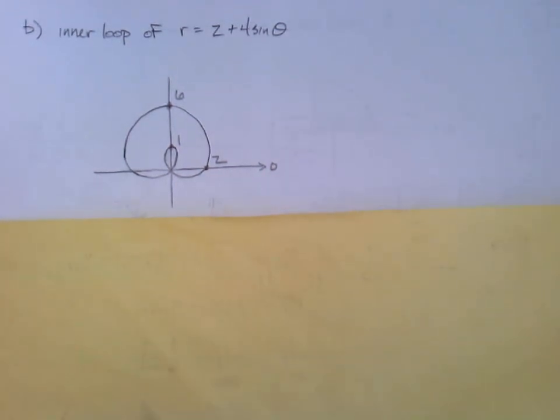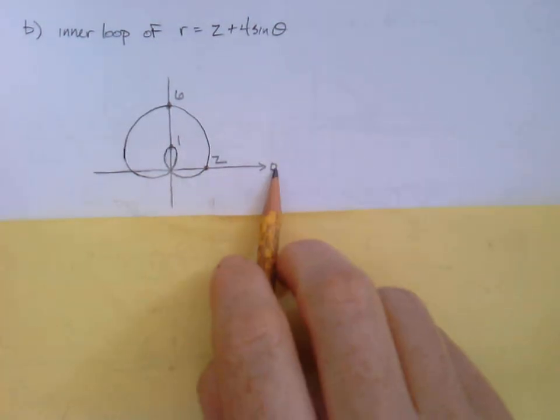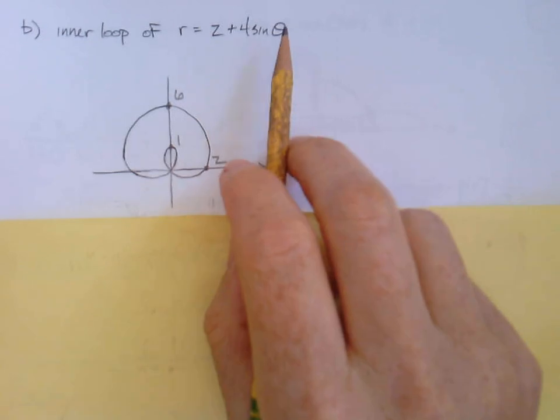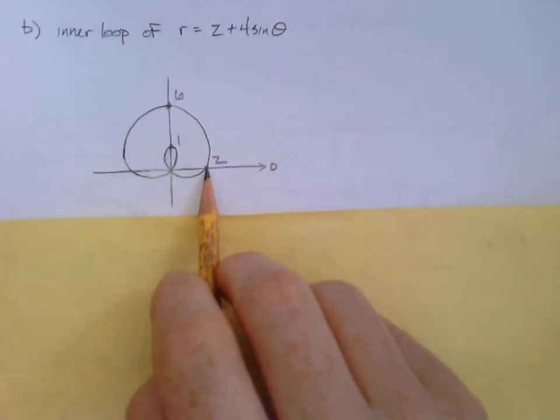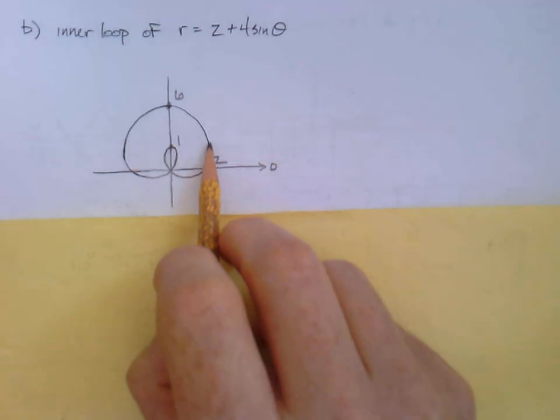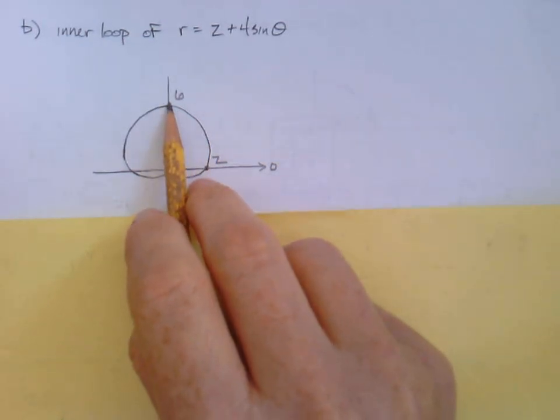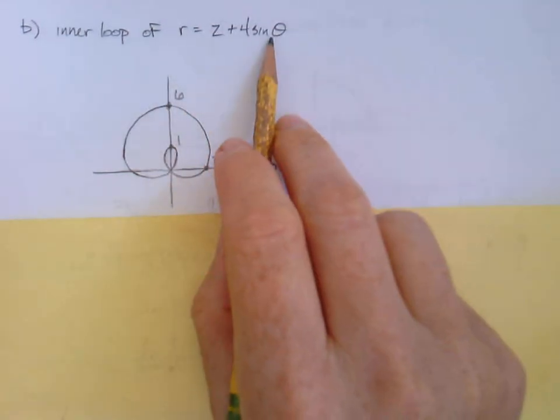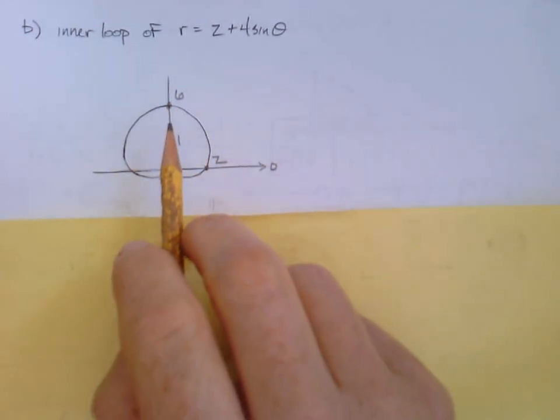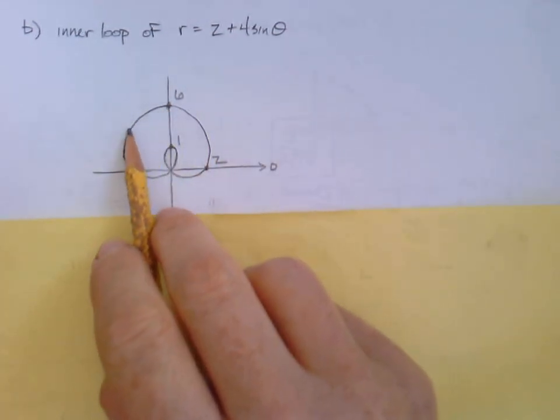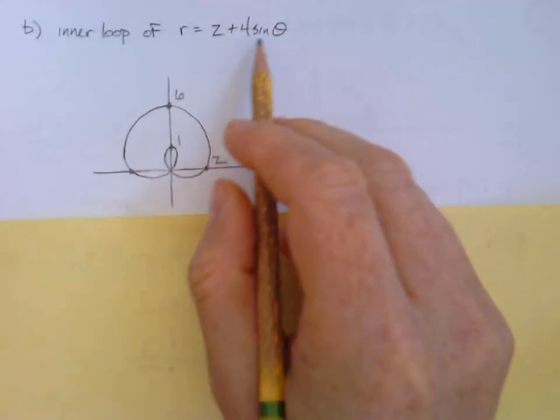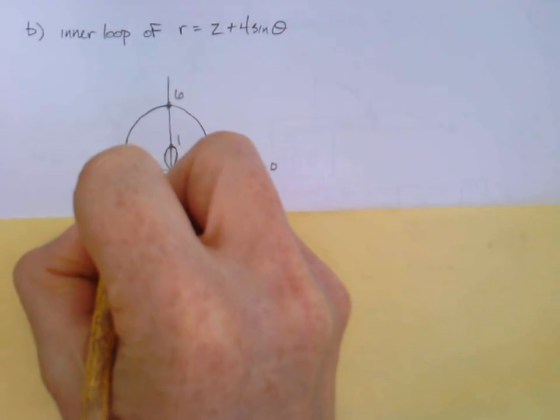And if you thought just about the way this was traced out, well, if you begin at 0, then you'll have a radius of 2. So sine 0 is 0, leaving you with just the 2. As you come to pi over 2, well, sine pi over 2 is 1, so you end up all the way out at 6. As you work your way over to pi, well, sine pi is 0, so you're back at a radius of 2.